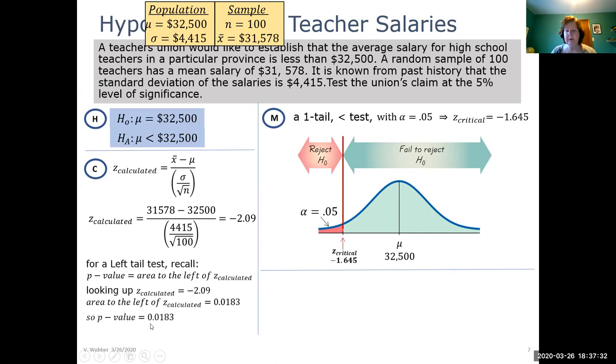Overall, our p-value is 0.0183. The rule we'll be testing is that if our p-value is small enough, in other words, if our p-value is less than our alpha value, we're going to reject our null hypothesis.